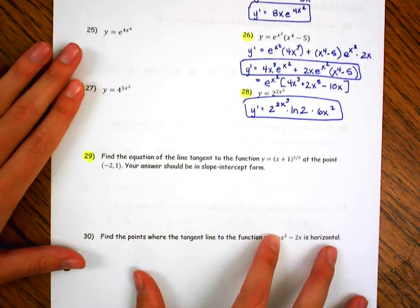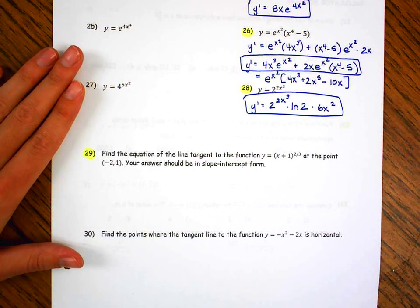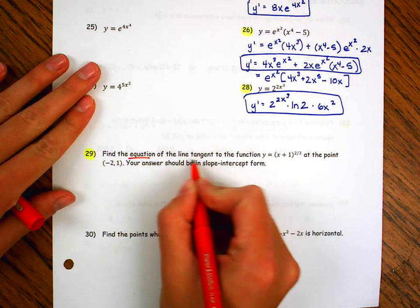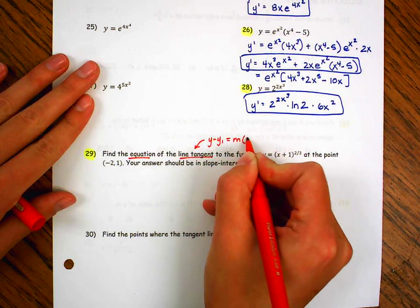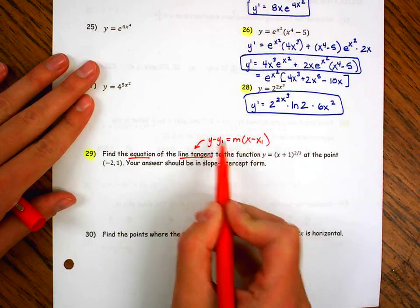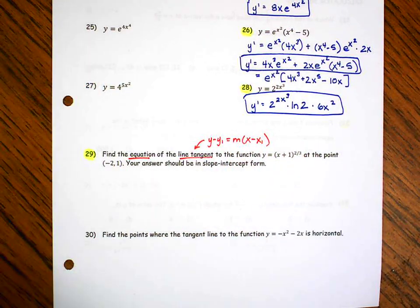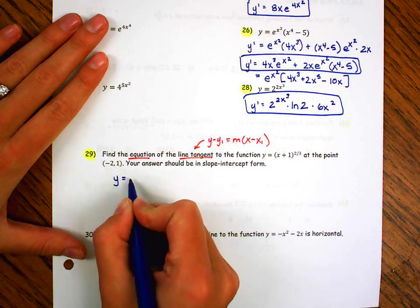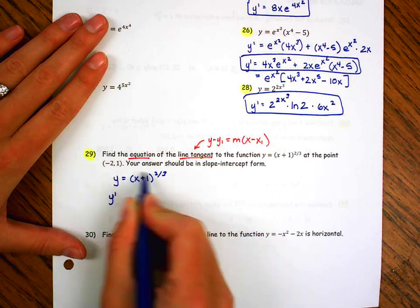Okay, number 29. Find the equation of the line tangent to the function at the point negative 2, 1, your answer should be in slope-intercept form. So if I'm going to write the equation, I should be thinking this. So I need a point, and I need a slope. Well, I have a point. They already gave it to me. I need a slope, and we find the slope using the derivative at a point. So the first thing I'm going to do, so here's my function.